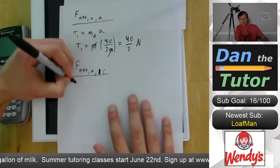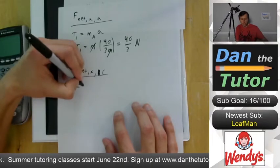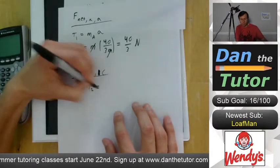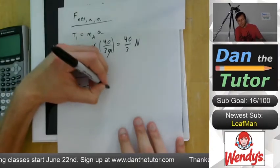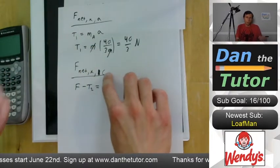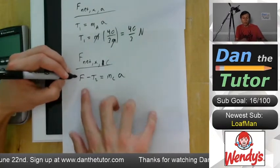We have F net, comma X, comma C, and that's going to equal all the forces to the right, F, minus the forces to the left, T2. And we're going to set that equal to MA. What mass? Mass of block C, because that's the net force equation we're writing it for, times the acceleration. We know F is 40. So 40 minus T2 equals whatever that mass is, times acceleration, which we said was 40 divided by 3M.